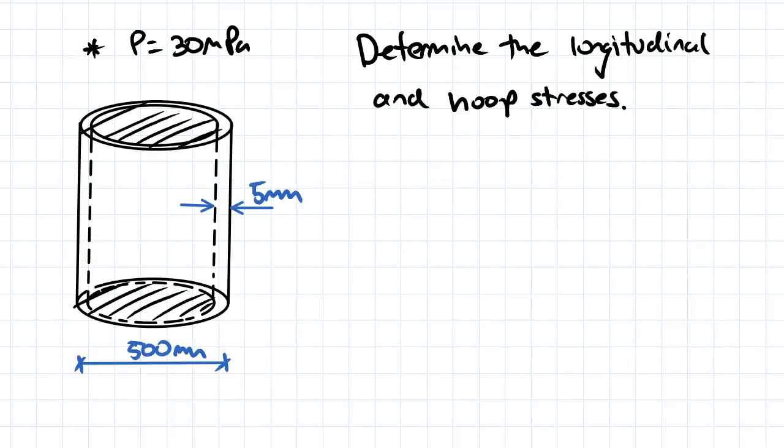So let's have a look at the question here. We've got our enclosed cylindrical pressure vessel with a diameter of 500 and a thickness of 5 millimeters, and we've got a pressure of 30 megapascals acting inside the vessel.